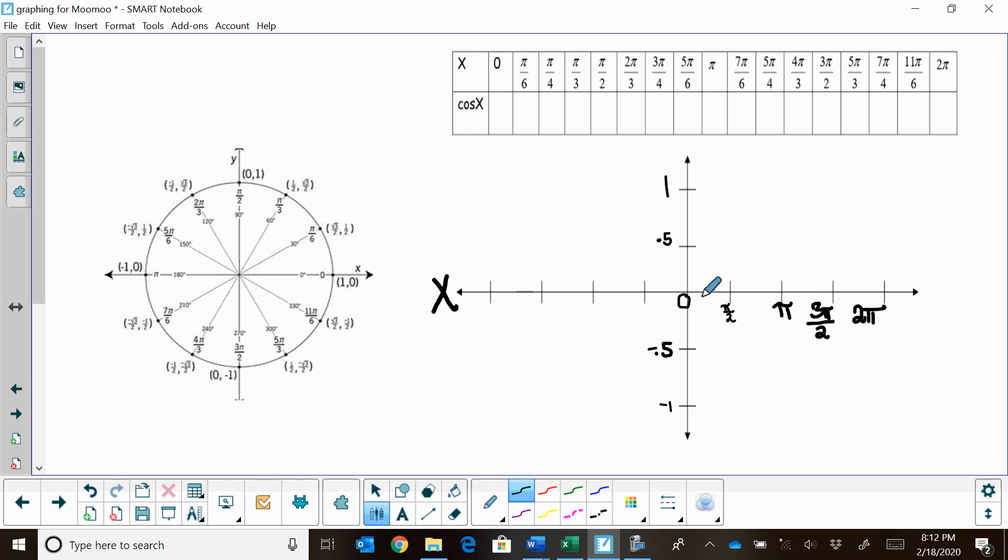I have it labeled in radians from 0 to 2π. On my y-axis, I labeled from 1 to negative 1, and I did put in a 0.5 and a negative 0.5 just so you could get a little scale.